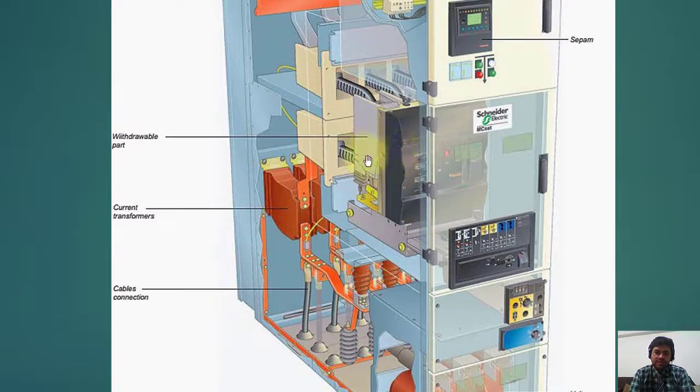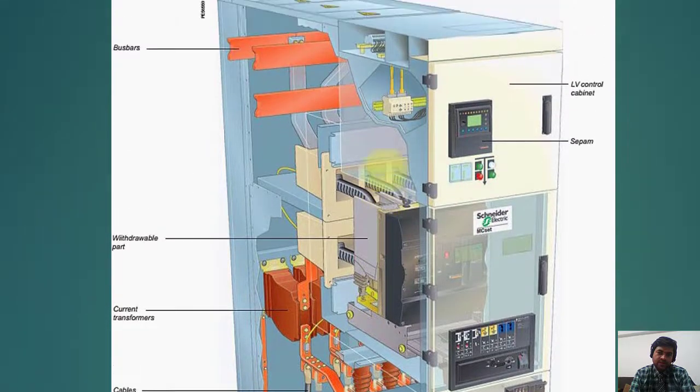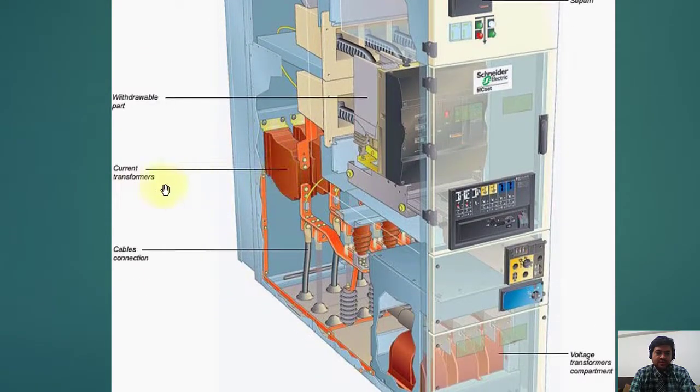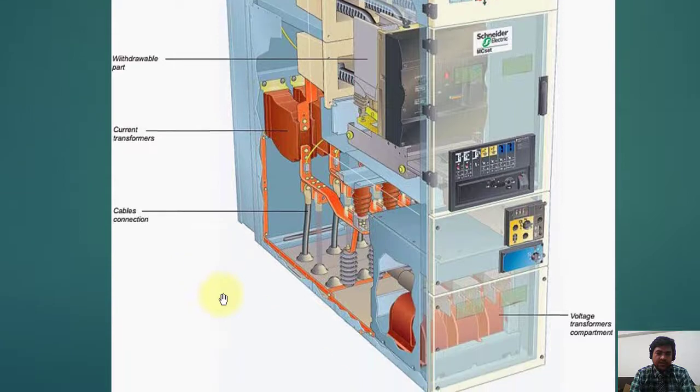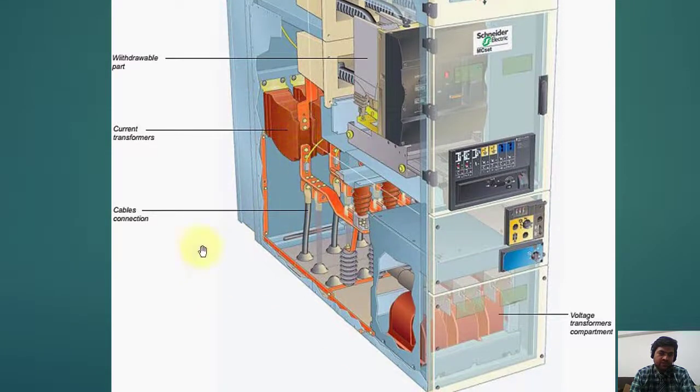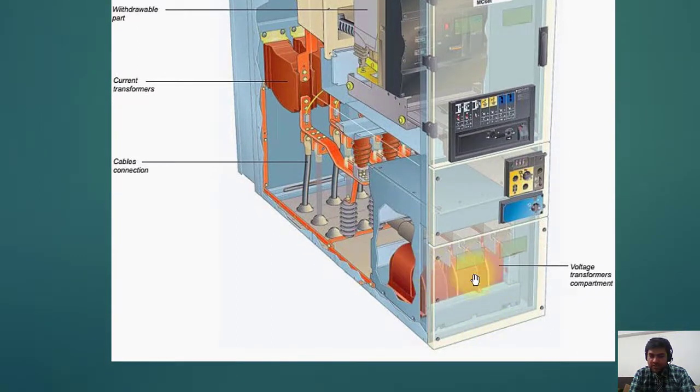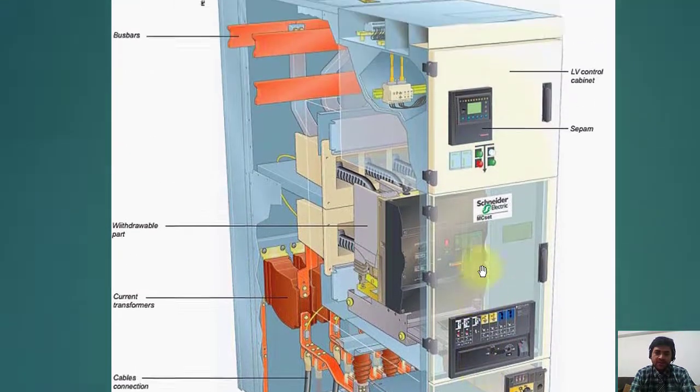Down there you can see this is the circuit breaker trolley. It can be racked out and racked in as I told you before. This is basically the bus power which is running between the panels, which is common between the panels. This is the current transformer installed in series of the circuit. These are cable connections which can be incoming and outgoing cables. This is the voltage transformer which is installed downside. This compartment, if you open it, you can access the voltage transformer. So this is how the MV panel looks like.